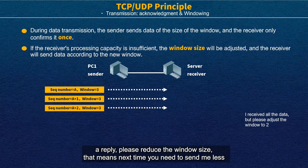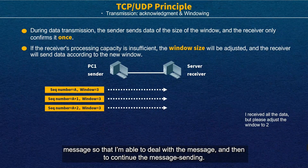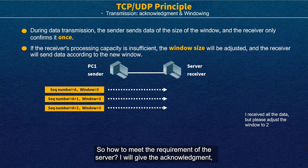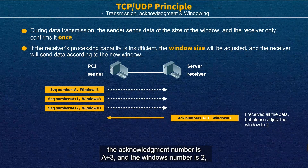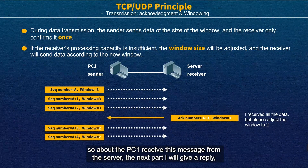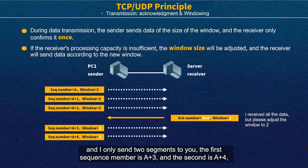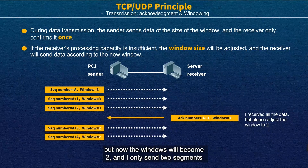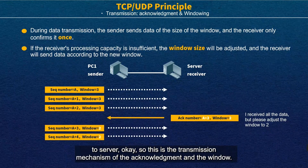The server gives the acknowledgement with ACK number A+3 and window number 2. When PC1 receives this message, it will send only two segments next: sequence numbers A+3 and A+4, with window size now 2. So this is the transmission mechanism of acknowledgement and window.